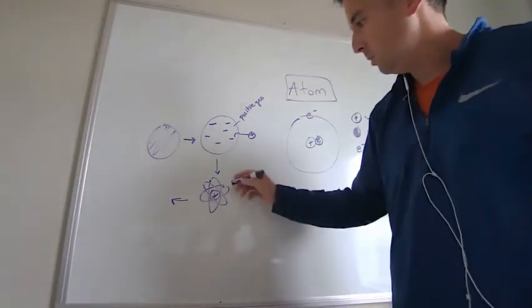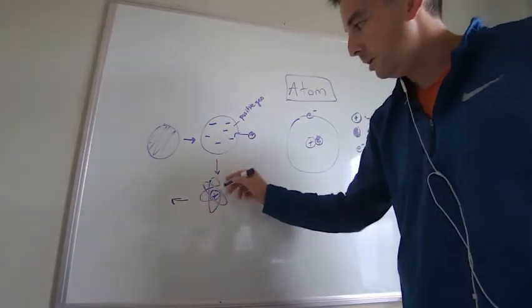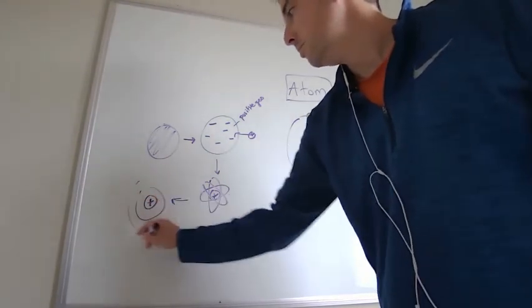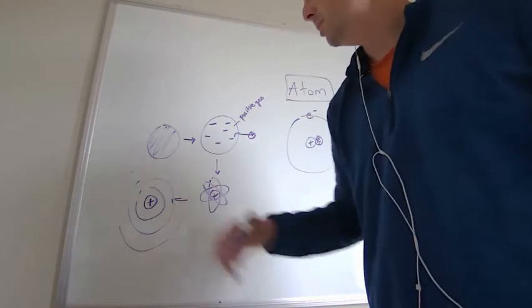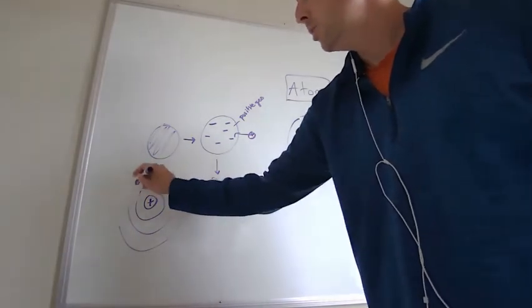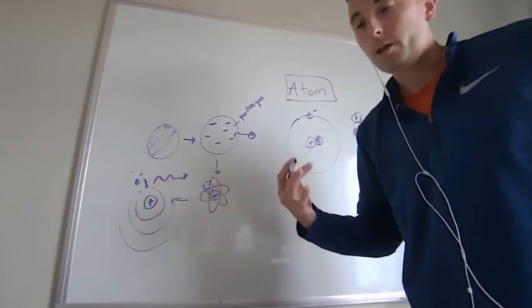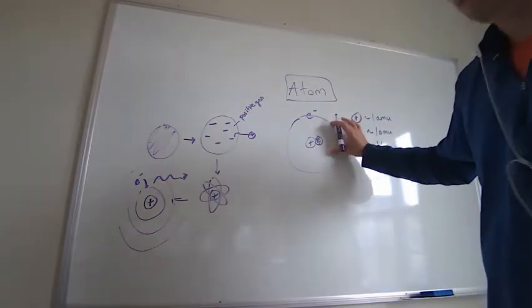Bohr goes a step further and starts looking at spectral lines. If you have orbits like this they're not going to fall down, so Bohr says there's a nucleus but there are actually these defined orbit pathways. So when electrons jump down they can release light which we see as spectral lines, which if you notice that's kind of how I drew it over here.